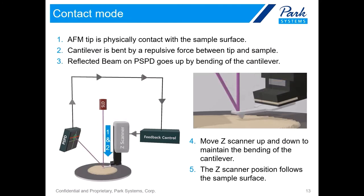Here is the simple procedure of contact mode. The AFM tip physically contacts the sample surface, and the cantilever is bent by the repulsive force between tip and sample. The reflected beam on the PSPD goes up by bending of the cantilever, and the Z scanner moves up and down to maintain the bending of the cantilever, following the AFM sample surface.